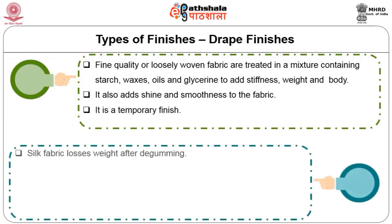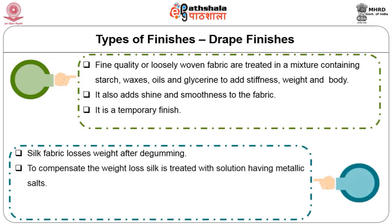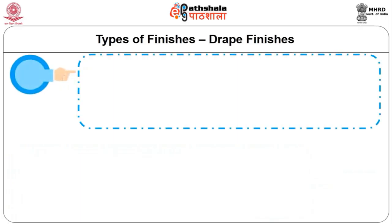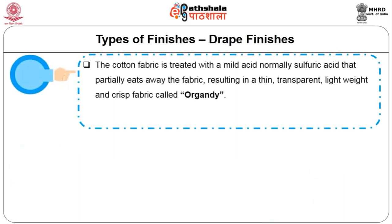Weighting: silk fabric loses weight after de-gumming; to compensate, silk is treated with a solution of metallic salts. It improves feel and draping quality but excessive weighting tends to weaken the fabric. In parchmentization, cotton fabric is treated with a mild acid — normally sulphuric acid — that partially dissolves the fabric, resulting in a thin, transparent, lightweight and crisp fabric called organdy. The stiffness created is permanent.